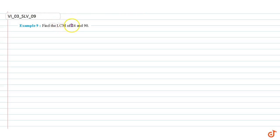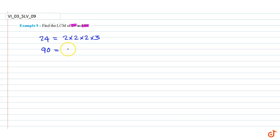In this question we have to find the LCM of 24 and 90. We know that the prime factorization of 24 is equal to 2 × 2 × 2 × 3. The prime factorization of 90 is equal to 2 × 3 × 3 × 5. The maximum number of times the prime number 2 occurs in the prime factorization of 24 or 90 is 3 — this occurs in the case of 24.